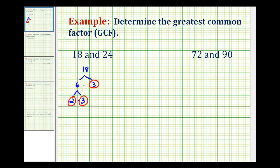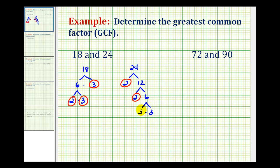Now we'll do the same for 24. We need two numbers that multiply and give us 24 — 2 times 12 would work. 2 is prime, so we'll circle it. Two factors of 12 would be 2 and 6. Again, 2 is prime. And then 6 is 2 times 3, which are both prime.